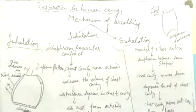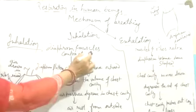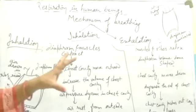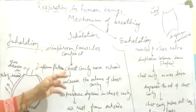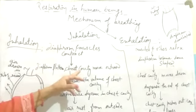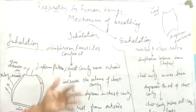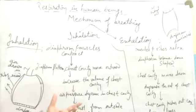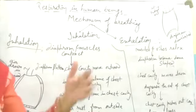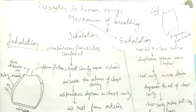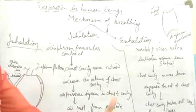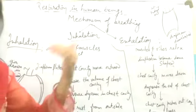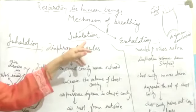During inhalation, the diaphragm and muscles between the ribs contract simultaneously. As a result, the diaphragm is flattened and the thoracic cavity, or chest cavity, moves upward. As a result, the chest cavity will increase in volume, air pressure decreases in the chest cavity, and then air rushes from the outside into the alveoli.